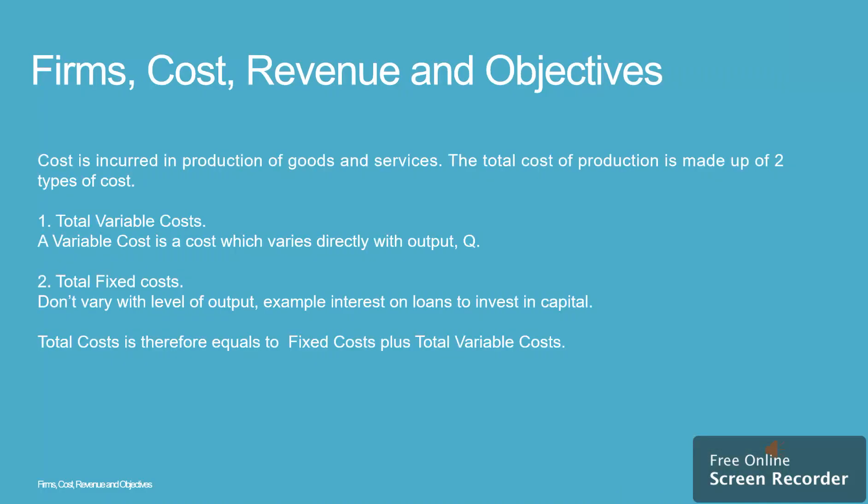Cost is incurred in the production of goods and services. The total cost of production is made up of two types of cost: 1. Total variable costs.